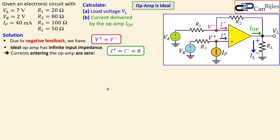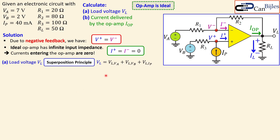For the load voltage VL, the most straightforward approach with three sources is the superposition principle. The total load voltage equals VL due to Va only, plus VL due to Vb only, plus VL due to Ip only. We add the partial effects to get the total load voltage — that is the power of superposition: dividing a complex problem into smaller ones.